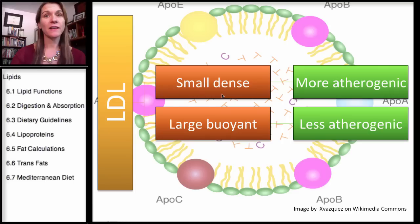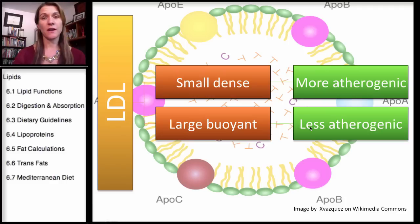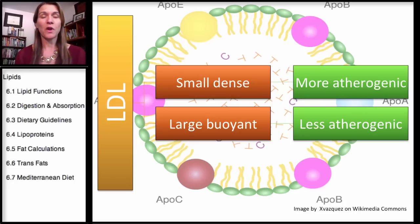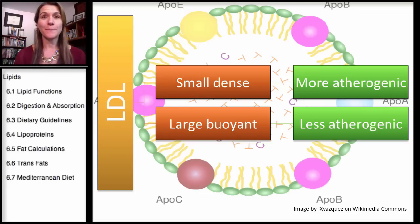The small dense LDL is actually more atherogenic, whereas the large buoyant is less atherogenic. The large buoyant LDL has a lower chance of being associated with heart disease, whereas the small dense tends to be associated with a greater rate of heart disease. They think the small dense LDL has a greater potential for contributing to heart disease.